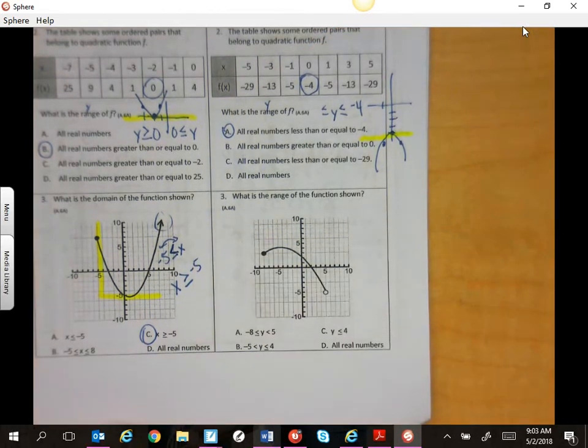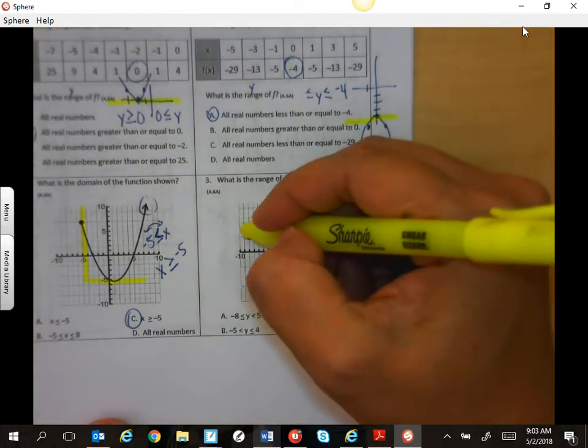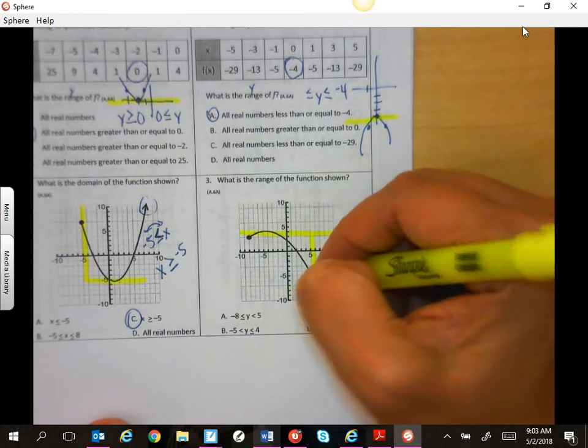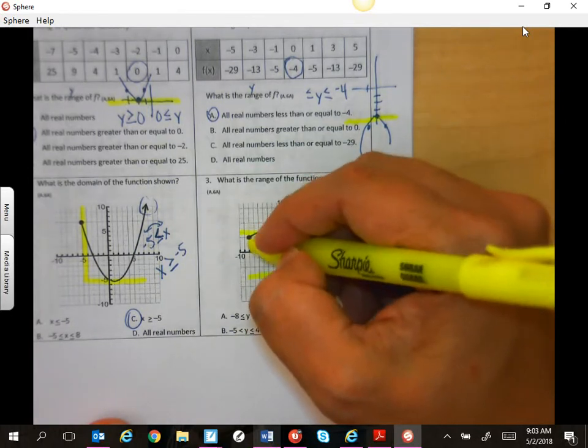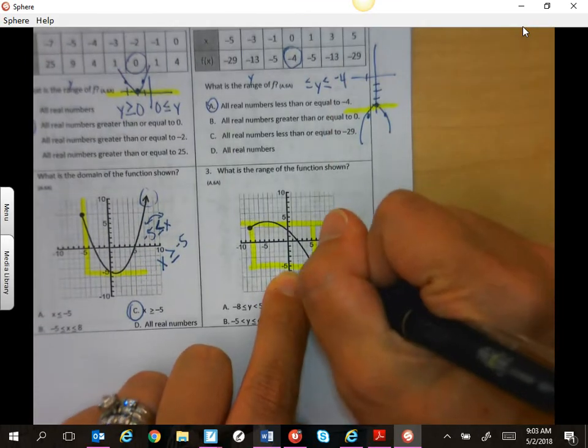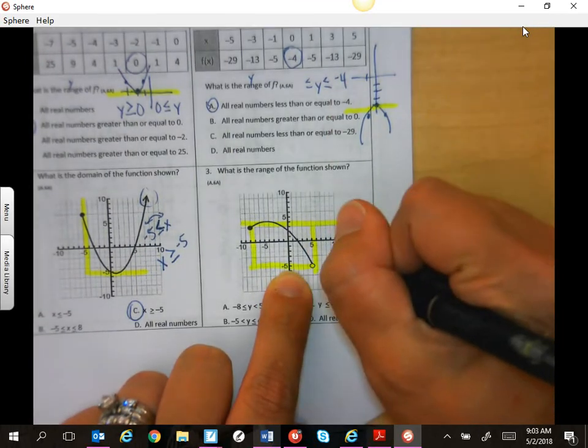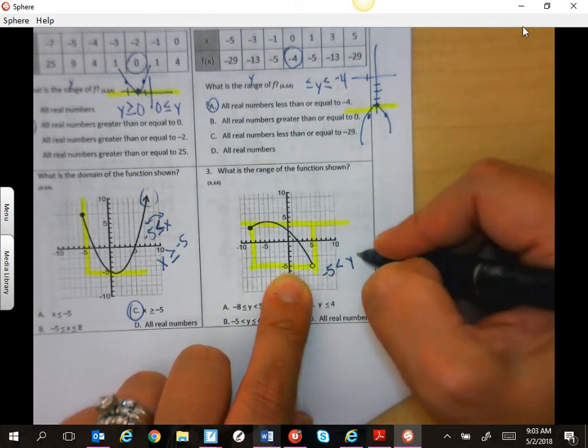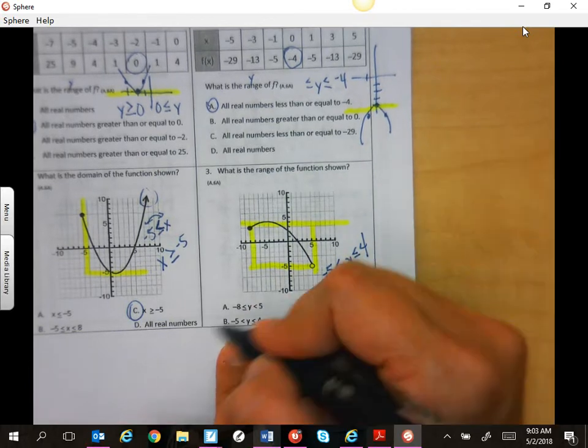And then if you do your window here, your range, so range is y. Here I can see I'm at negative 5, but this is an open circle, so it's just less than. And then it goes up to 4, which it does touch, so that is or equal to. So it has to be b.